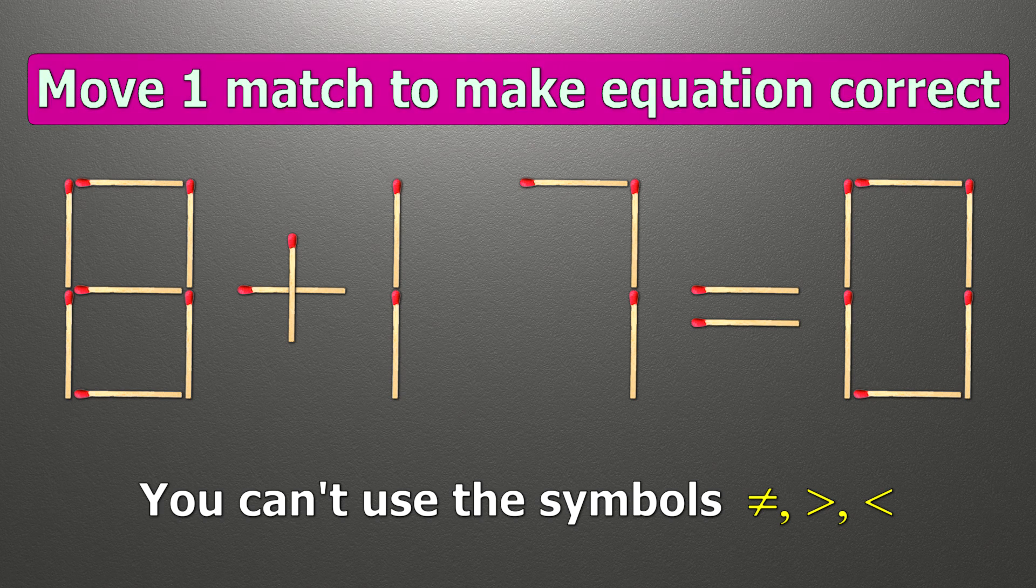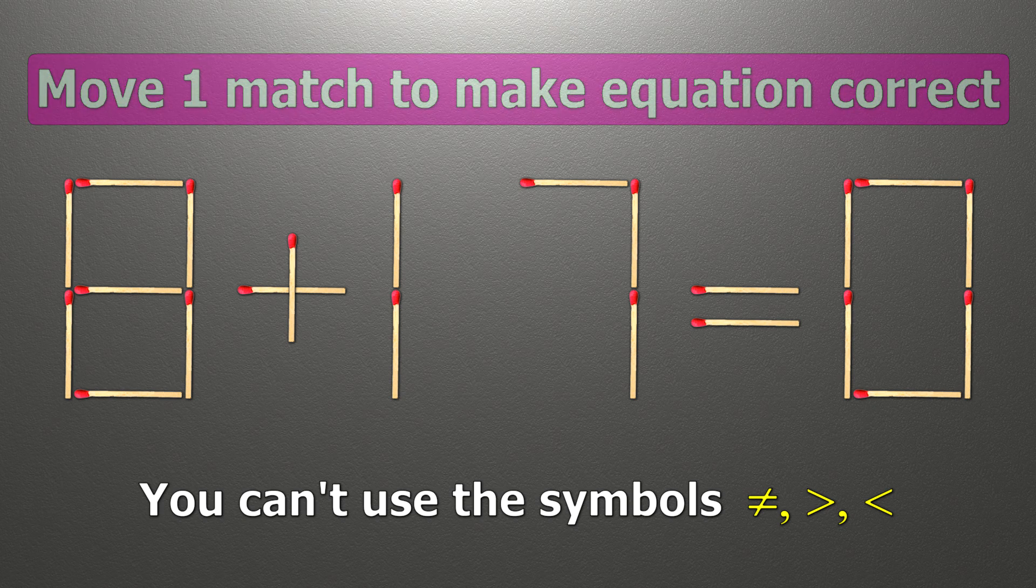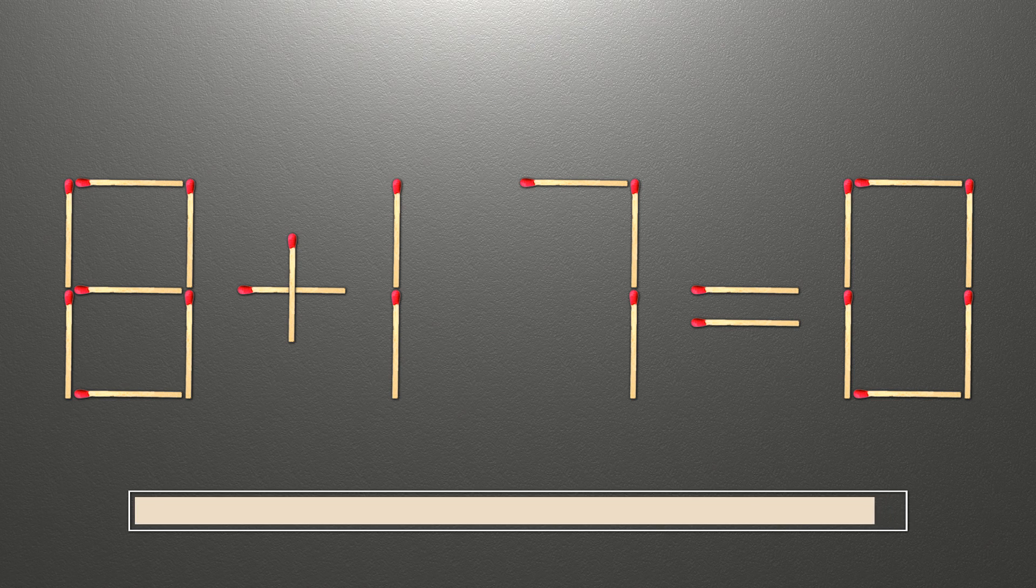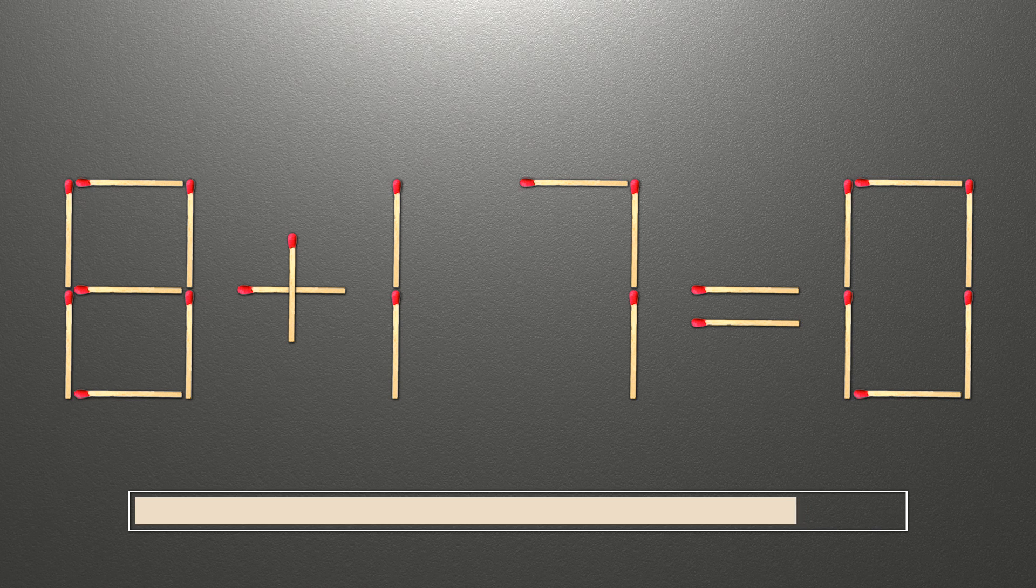We need to move one match to make our equality correct. This is a pretty simple math problem that both children and adults can solve. Those who are good logical thinkers have no problem solving this task.